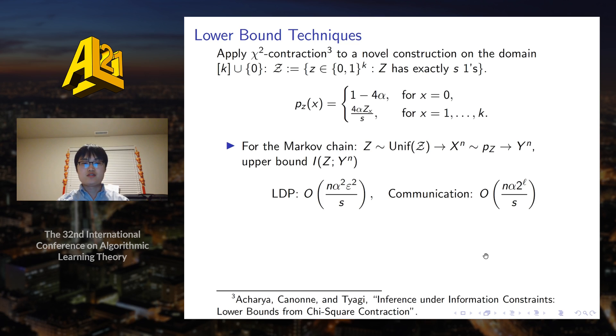Then the user may send their messages according to the samples received. We will first upper bound the mutual information between z and the messages. The bounds for LDP and communication are shown on the slide. Then we can apply Fano's method. One remaining ingredient is the log n, where n is basically a packing number of the family of distributions. We can show that log of n is at least S times log K over S. Combining all the ingredients yields the desired lower bound.